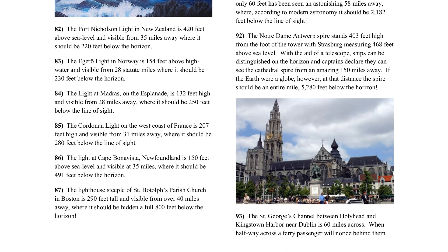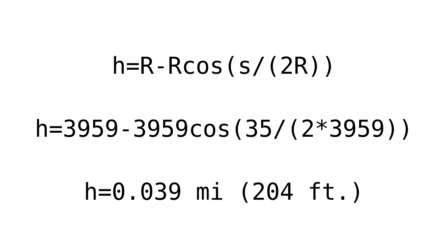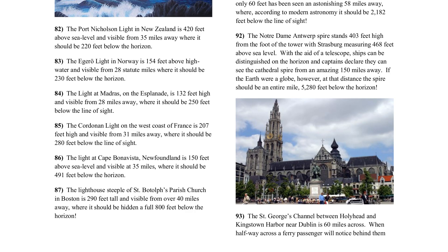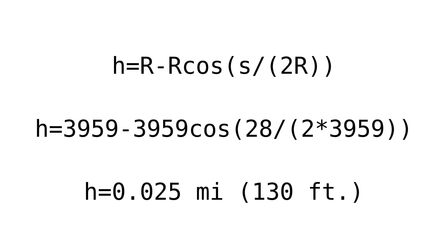The Port Nicholson light in New Zealand is 420 feet above sea level, and visible from 35 miles away, where it should supposedly be 220 feet below the horizon. In actuality, the height of the curve would be about 204 feet, so the top of this lighthouse would be above the horizon. The Eregø light in Norway is 154 feet above high water, and visible from 28 statute miles, where it should supposedly be 230 feet below the horizon. In actuality, the height of the curve between these two points is 130 feet or so — again, it should be clearly visible.